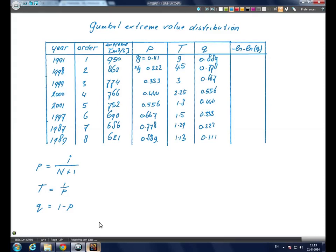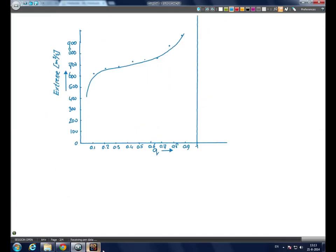If you would simply make a frequency plot of, for example, Q against the extreme, we would see an S-curve. As we can see, it is hard to estimate an extreme with, for example...